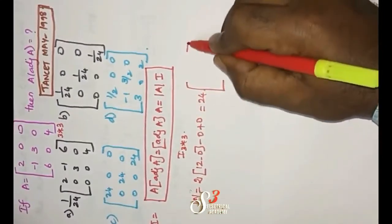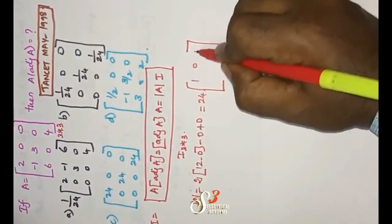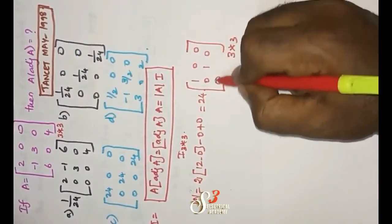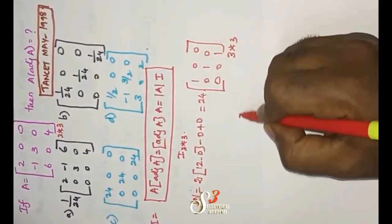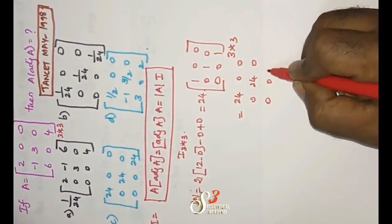Determinant into identity matrix but its size will be 3 by 3. That is the identity matrix: 1, 0, 0; 0, 1, 0; 0, 0, 1. So you have to multiply with everything 24, giving 24, 0, 0; 0, 24, 0; 0, 0, 24.